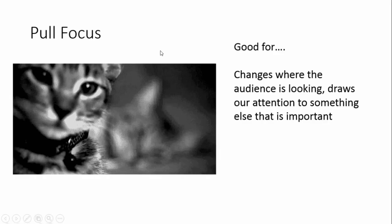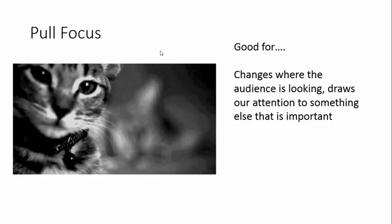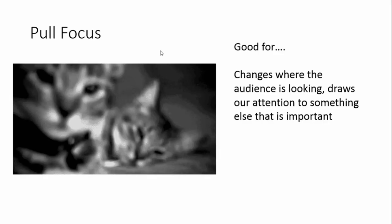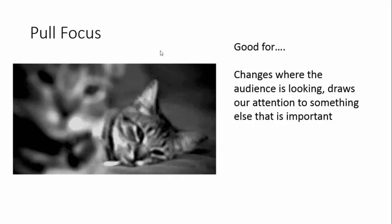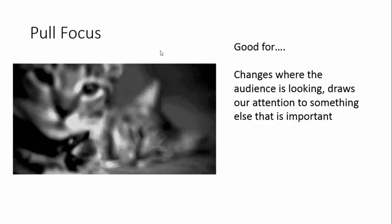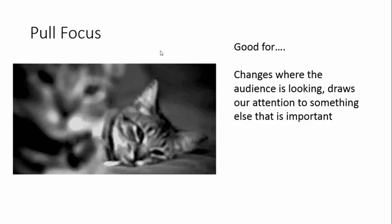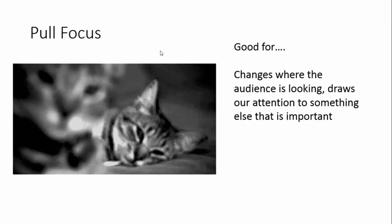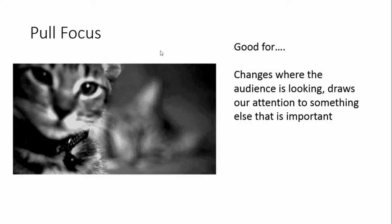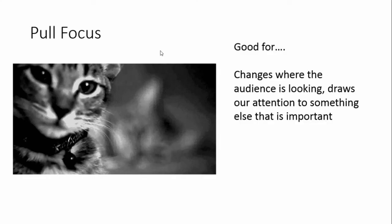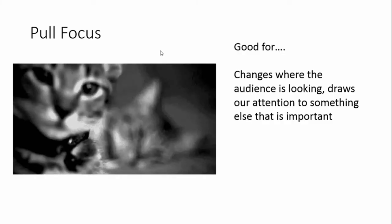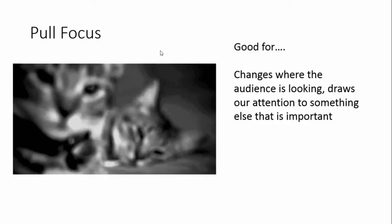A pull focus is where you change the focus during a shot — somebody's job is literally to pull the lens on the camera and change what it's focusing on. In this case we're going from focusing on a cat in the background to a cat in the foreground. This is normally done to change what the audience is looking at and draw attention from one thing to another — to highlight that something else is important or to catch a character's reaction.